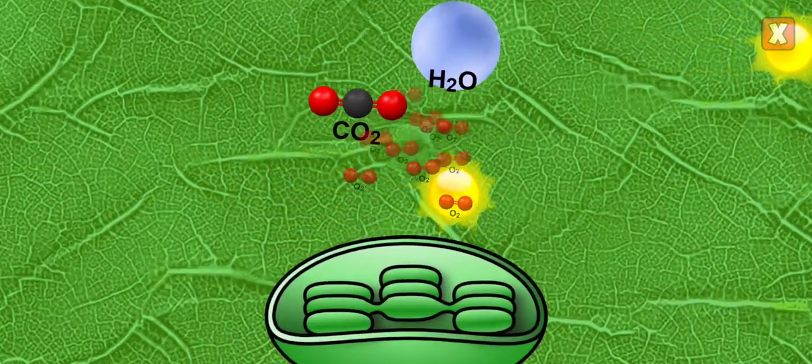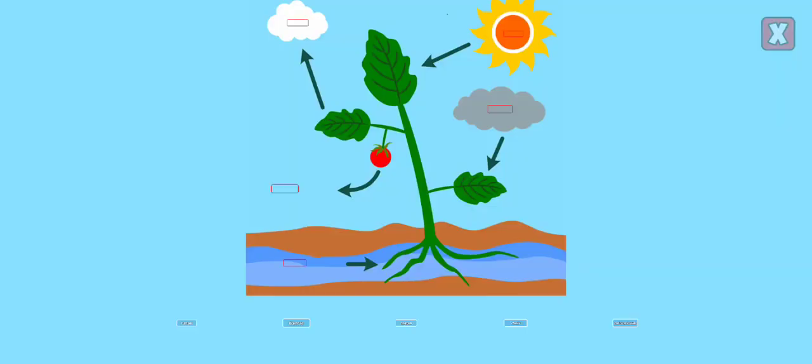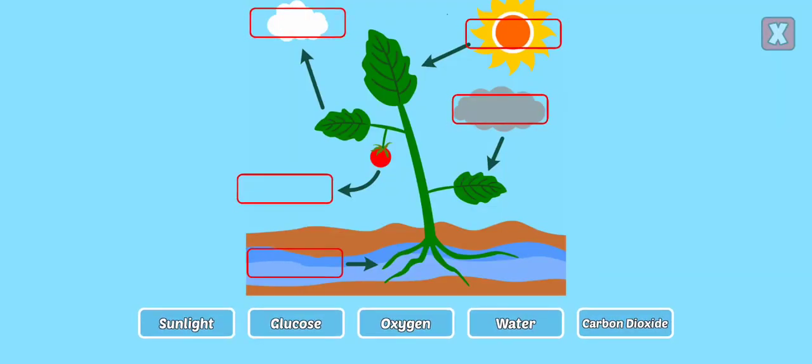You started photosynthesis and the plant can grow! Drag the labels to complete the process of photosynthesis.